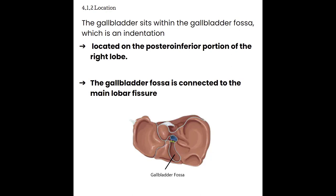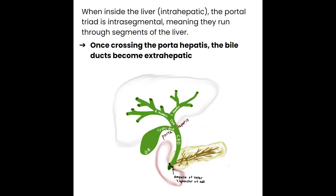The gallbladder sits within the gallbladder fossa, an indentation on the posterior inferior portion of the right lobe of the liver, connected to the main lobar fissure. The bile ducts are part of the portal triad, which also includes the hepatic arteries and the portal veins. When inside the liver — intrahepatic — the portal triad is intrasegmental, running through the liver segments. Once crossing the porta hepatis, the bile ducts become extrahepatic and continue to course towards the pancreas and intestines.